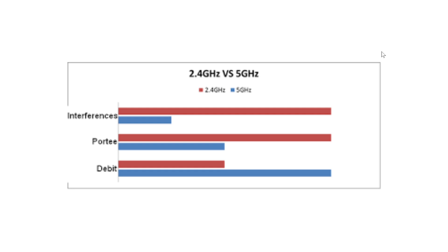So inside your home you'll probably prefer 5 gigahertz. If you need to go far from your router — outside in the backyard — then 2.4 may actually work better. It also depends on how many people around you are using routers and devices on these ranges. That's pretty much what you need to know about 2.4 versus 5 gigahertz.